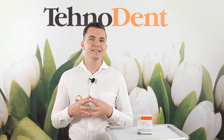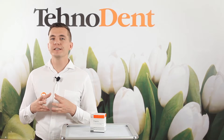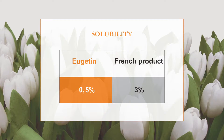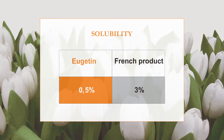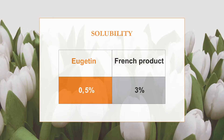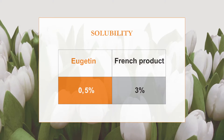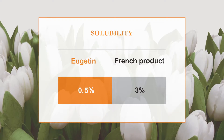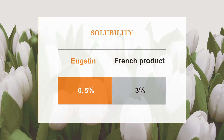Secondly, there is a strong antiseptic property of thymol iodide. And thirdly, the assurance that the material will not dissolve in the canal in the long term is given by a solubility parameter of 0.5%, compared with 3% of a freshly produced popular material. This parameter is due to the absence of mint and anise oil in Eugetine, which usually prevent the material from gaining maximum strength values.